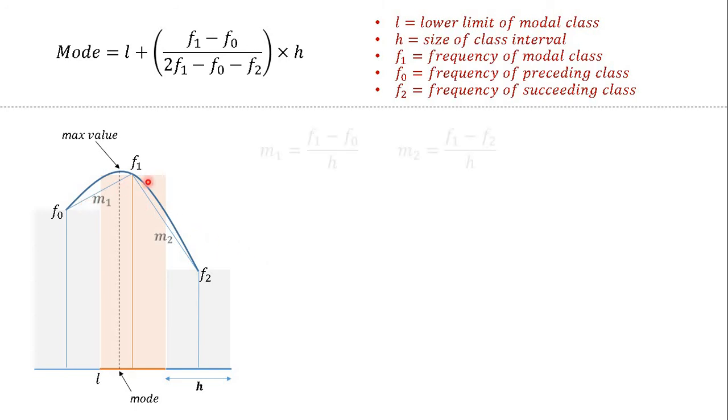Now here slope M1 is given by f1 minus f0 divided by h. And the magnitude of slope of this line is given by f1 minus f2 divided by h. Note that slope of this line is always negative. But I have written its absolute value here as f1 minus f2 divided by h.